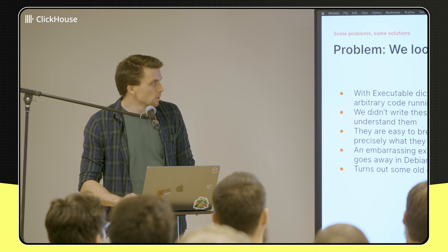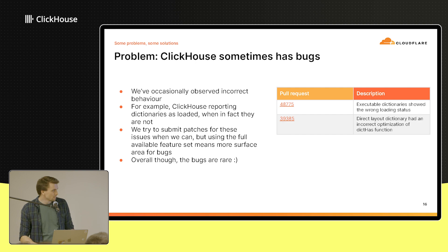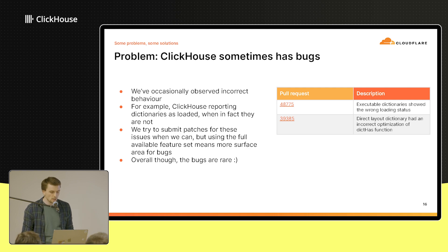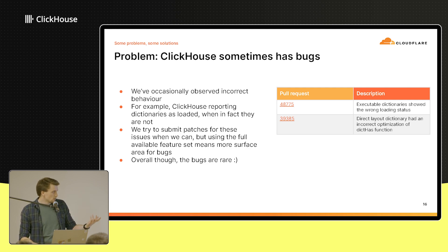We should have potentially noticed this sooner, but there's another problem: sometimes, very occasionally, ClickHouse has bugs. The one I'm highlighting is where executable dictionaries reported themselves as having been successfully loaded, but in fact they did not. So with the Python issue, the script obviously failed, but ClickHouse was happily reporting the dictionary was loaded and everything was fine — which increased the delay between when things broke and when we knew. When these things happen, we do try to understand the problem, make a fix, and submit it upstream. Bugs are rare, but they do happen.